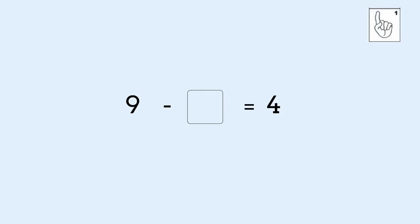Four in my head, five, six, seven, eight, nine. I counted five fingers. This means that the missing number is five. Nine take away five equals four.